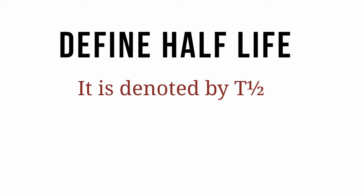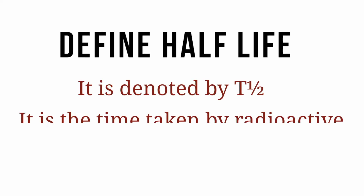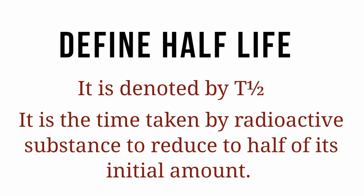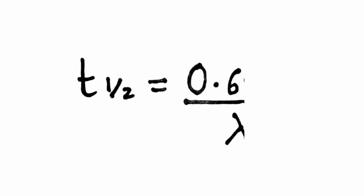Define half-life. It is denoted by T with the subscript half, and it is the time taken by a radioactive element to reduce to half of its initial amount. The half-life is given by the formula T½ = 0.693 / λ.